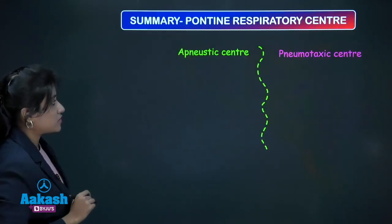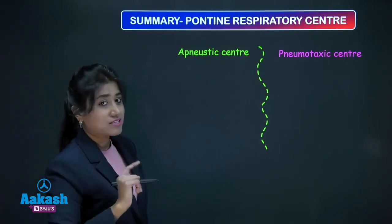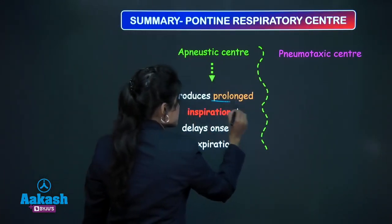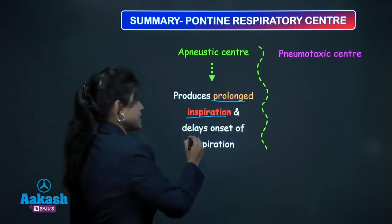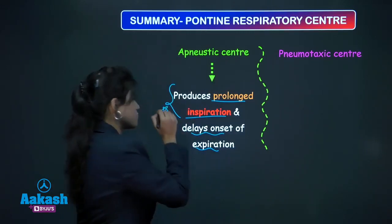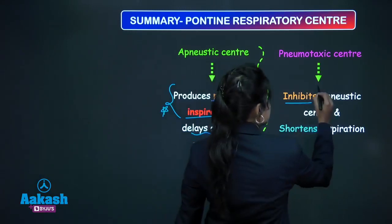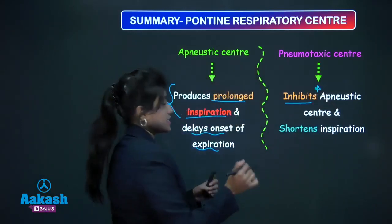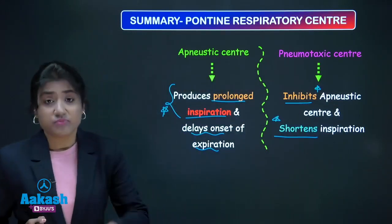Let us talk about them quickly. The apneustic center produces prolonged inspiration and delays the onset of expiration — the word 'prolonged inspiration' is very important. The pneumotaxic center inhibits the apneustic center and shortens inspiration.